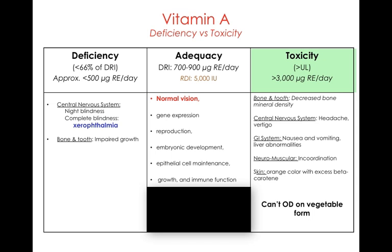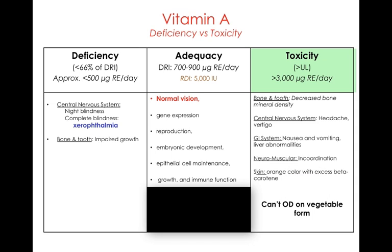The one I want you to remember is something called beta-keratinemia, and this is non-toxic. This is when you consume bags and bags of carrots. The beta-carotene gets deposited in the fatty tissue of your skin and turns it orange. However, this is a non-toxic condition — you cannot overdose on the vegetable form of vitamin A. Toxicities are associated with the animal form, not the vegetable form.